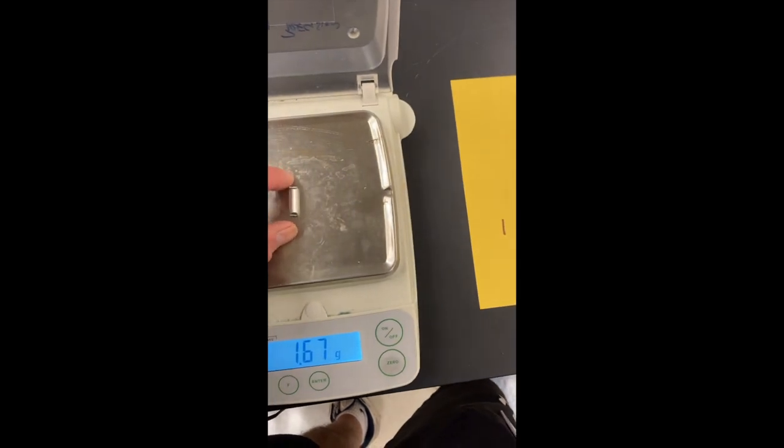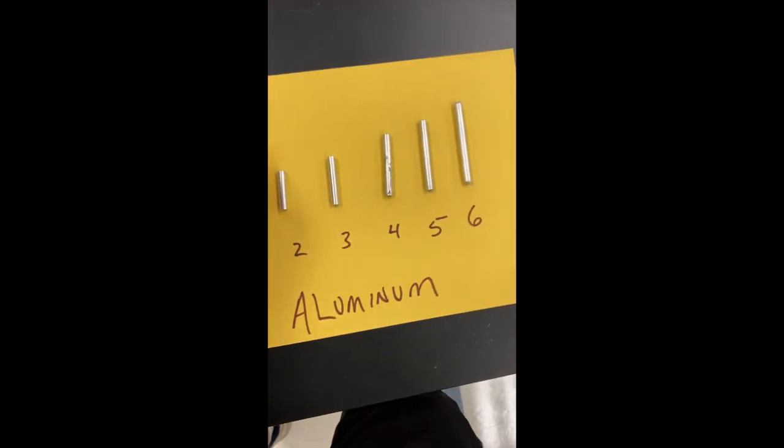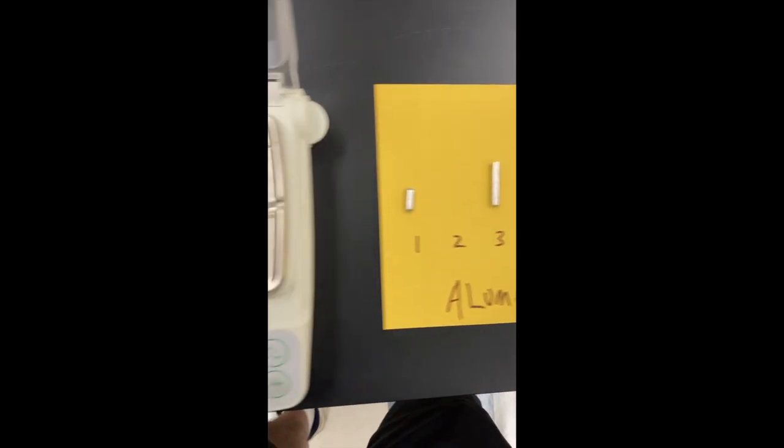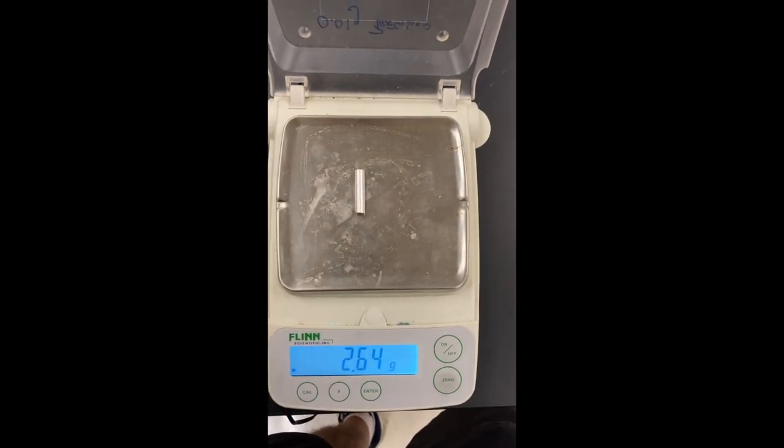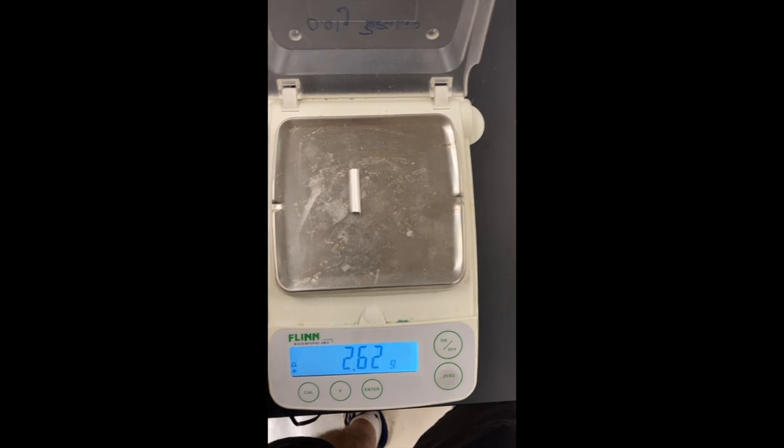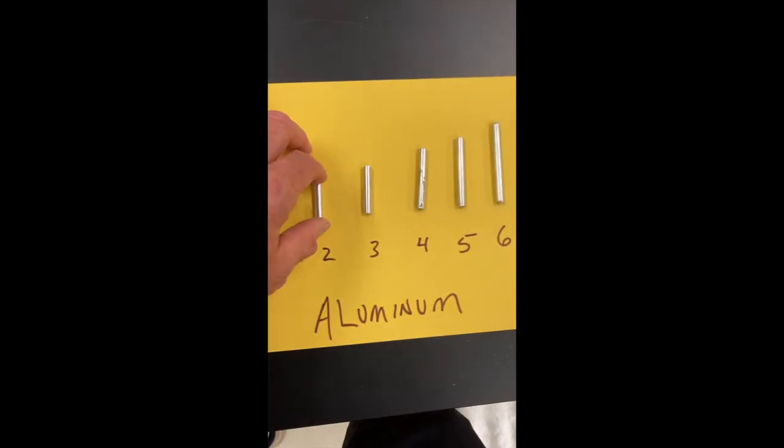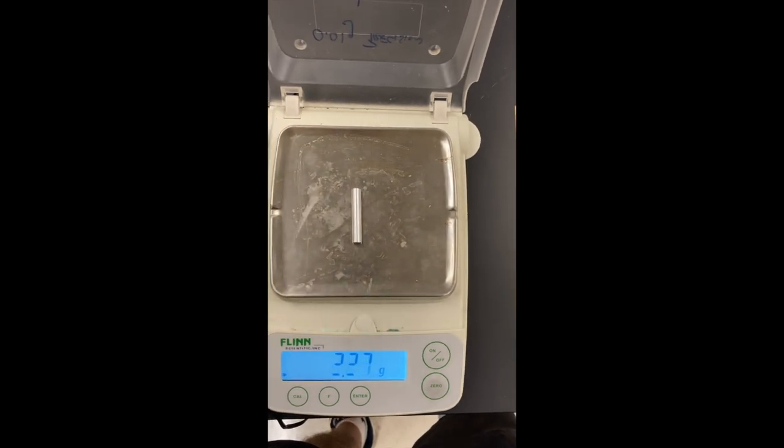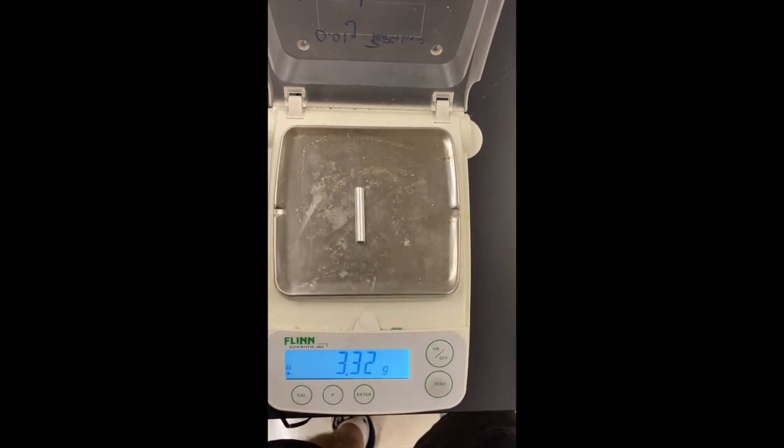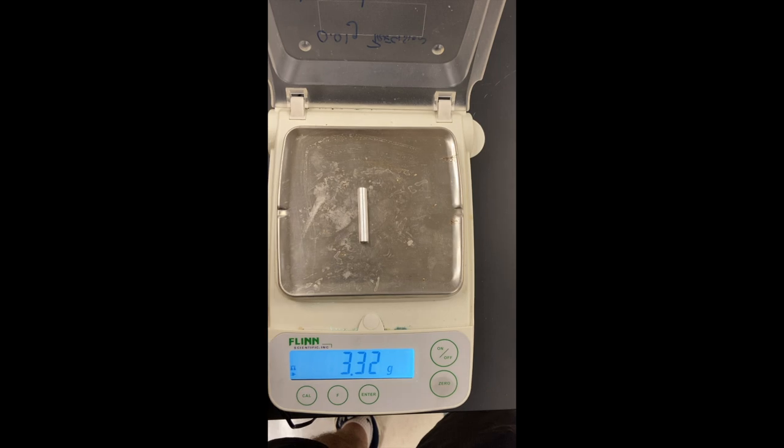Okay, let's get piece number two. Check our scale, it reads zero, and this is the mass of piece number two. Come get piece three. Piece three has a mass of this - write that down in your data table.